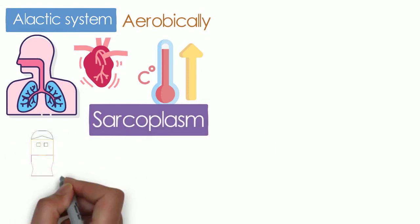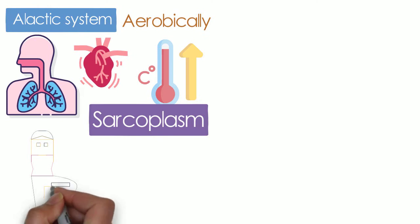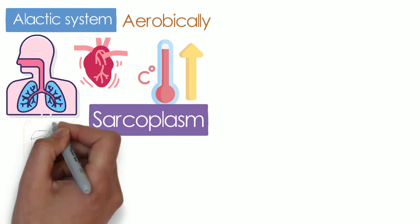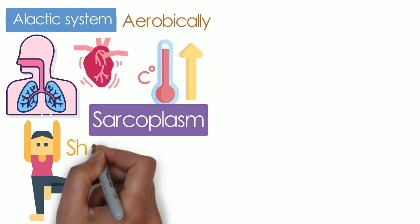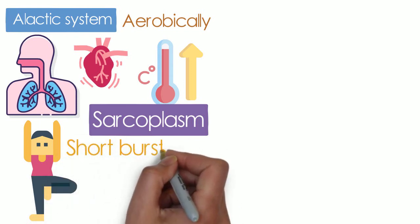This happens in the sarcoplasm of muscle cells. Since ATP is stored in the muscles, it can be used immediately to give muscle energy for high-intensity, short-duration exercises. Hence, it is ideal for short bursts of energy and exercises.